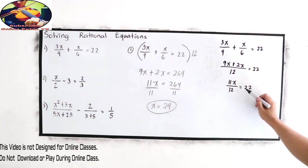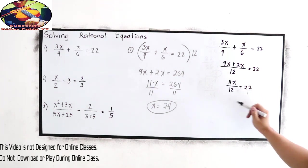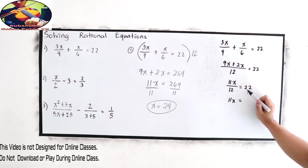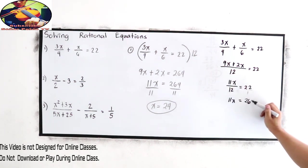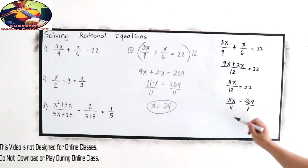So we know that 22 has a denominator of 1. So 11x times 1, 11x, is equal to 12 times 22, which is 264. And divide by 11.